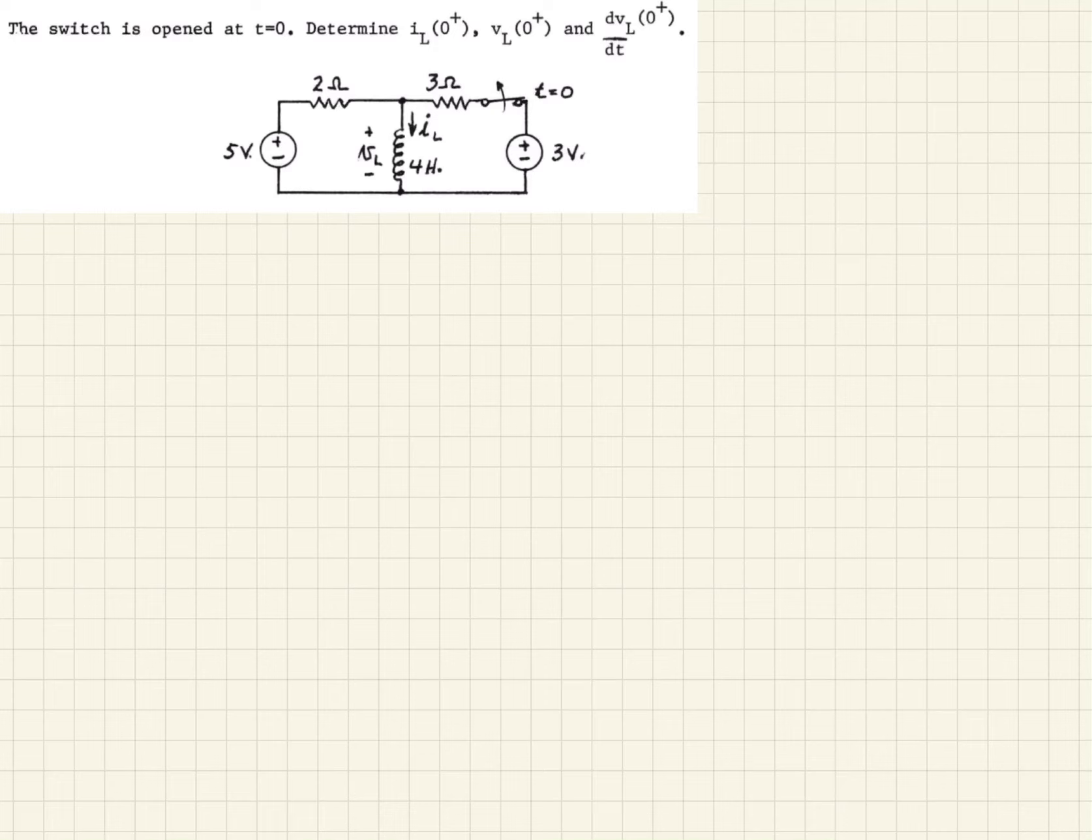So in this circuit, we're given two voltage sources, 3V and 5V, and this inductor. We're told that the switch has been closed for a significantly long time, such that the circuit is in steady state.